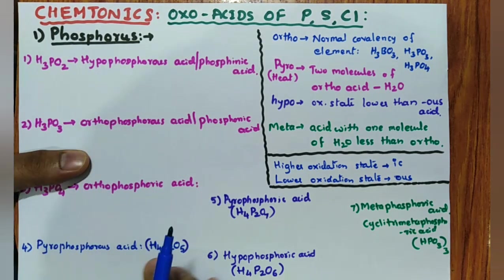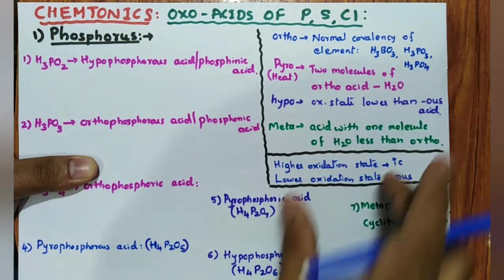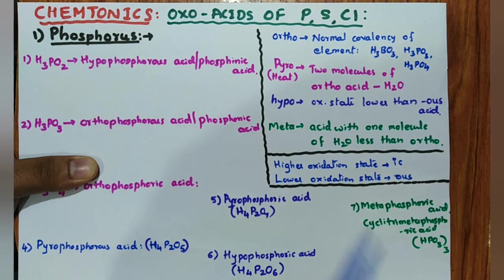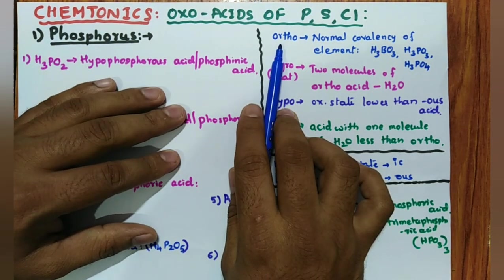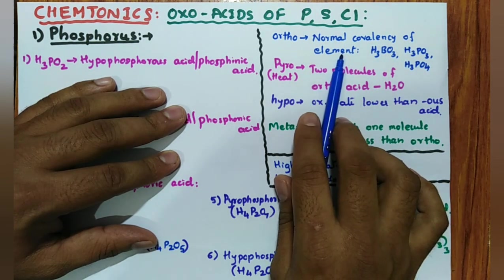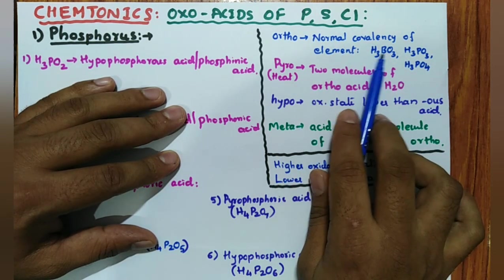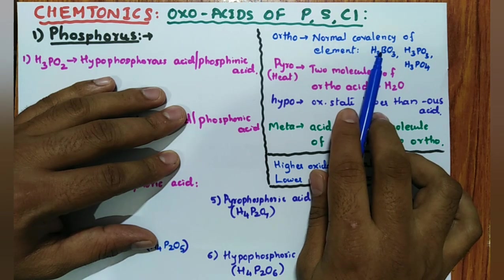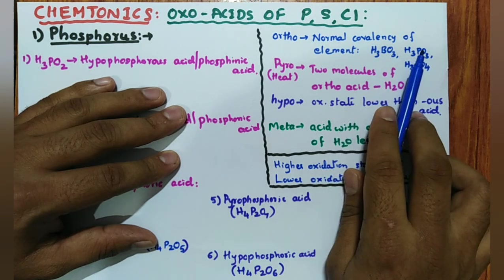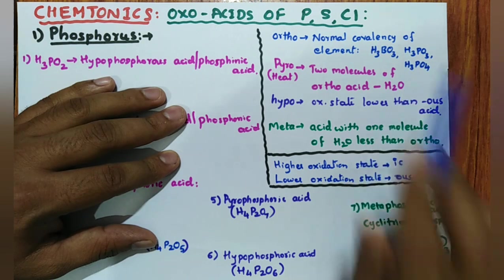Before going to write or remember these names, you have to know these prefixes. Wherever you see 'ortho', the meaning is the normal covalency of the element. For example, boron's normal covalency is +3, hence H₃BO₃ is orthoboric acid. This is +3 for orthophosphorous acid. Plus 5 is also common for phosphorus, hence orthophosphoric acid.